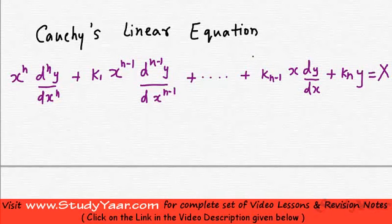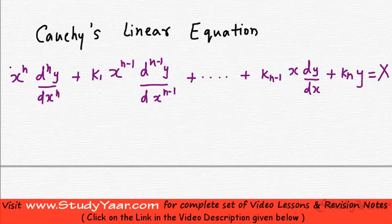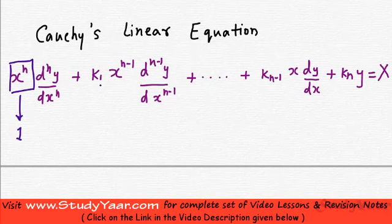Let's now look at another type of linear equation which is known as Cauchy's linear equation. It is of the form x raised to power n, d raised to power n y upon dx raised to power n, plus k1 x raised to power n minus 1, d raised to power n minus 1 y upon dx raised to power n minus 1.